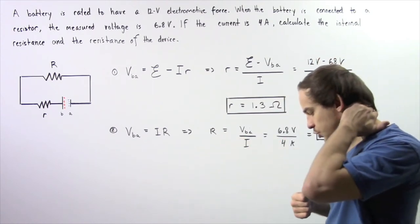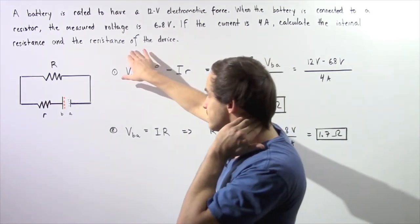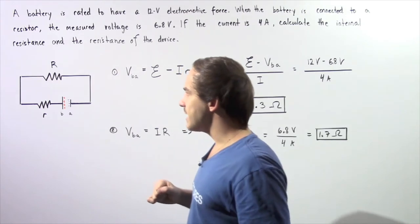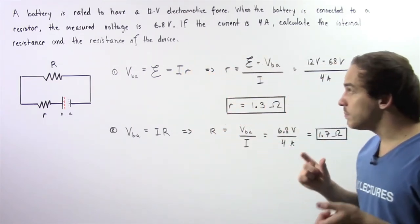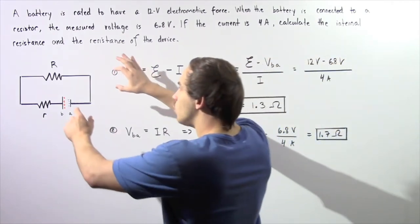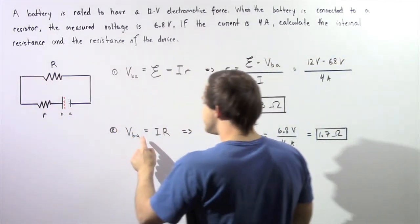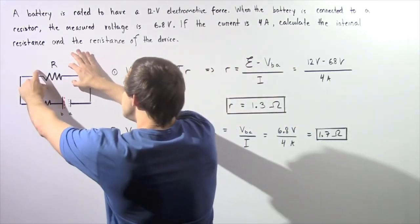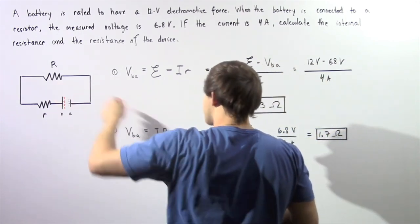Now let's move on to part 2, where we want to calculate the resistance of our device — that is, uppercase R. We essentially want to apply Ohm's law, which states that the voltage difference across our resistor is equal to the product of the electric current through that resistor multiplied by the resistance of this device.